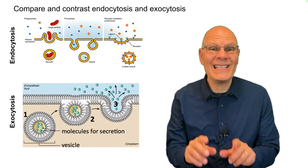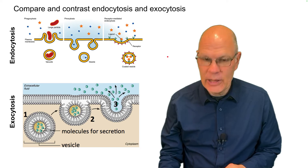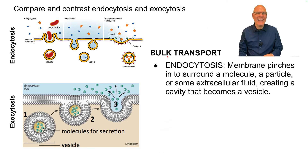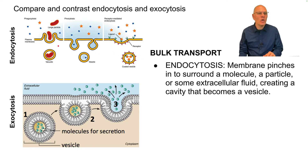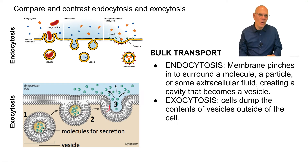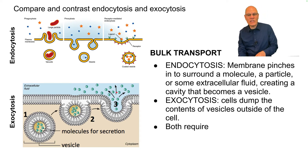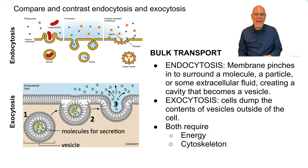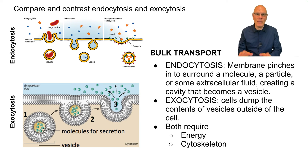Compare and contrast endocytosis and exocytosis — both forms of bulk transport. In endocytosis, the membrane pinches in to surround a particle or extracellular fluid, creating a cavity that becomes a vesicle. In exocytosis, a vesicle containing something fuses with the membrane and its contents are dumped outside the cell. Both processes require energy and involvement of the cytoskeleton, which changes the shape of the membrane.